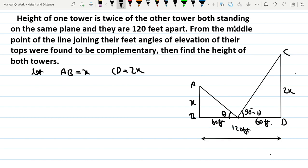In triangle ABM, tan theta equals perpendicular divided by base. So tan theta equals AB over BM, which is x over 60. This is equation one.